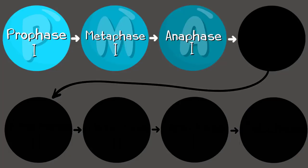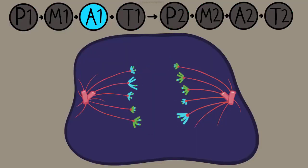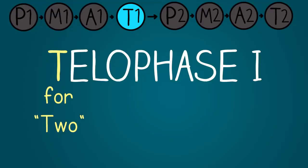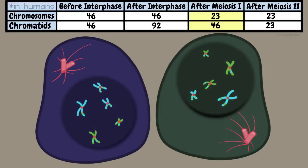During anaphase one, think of A for away because the chromosomes are going to be pulled away by the spindle fibers. Then we end with telophase one where you have two newly formed nuclei and it becomes obvious that you're going to end meiosis one with two new cells. Cytokinesis follows with splitting the cytoplasm.